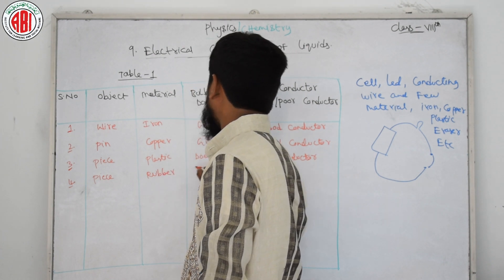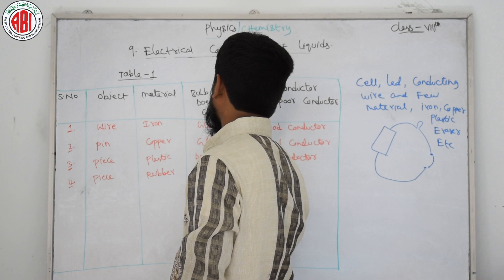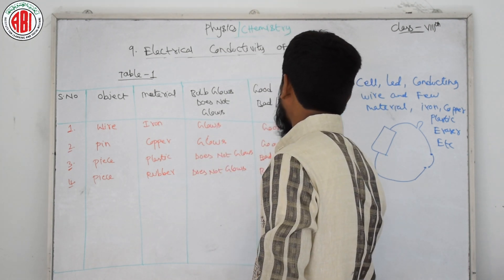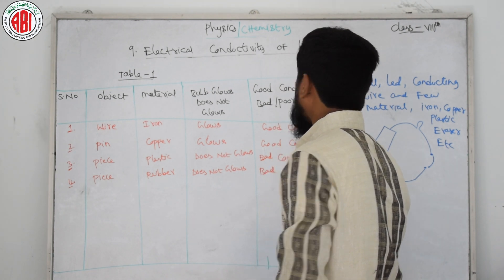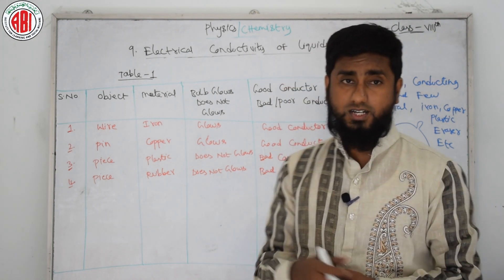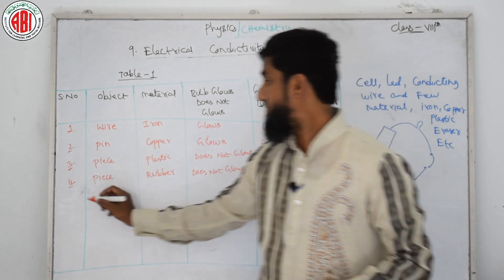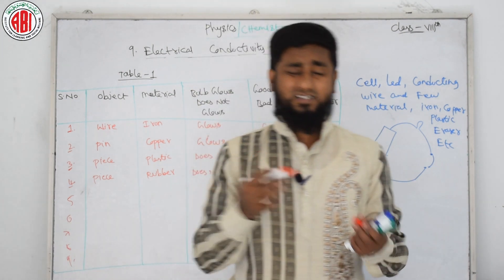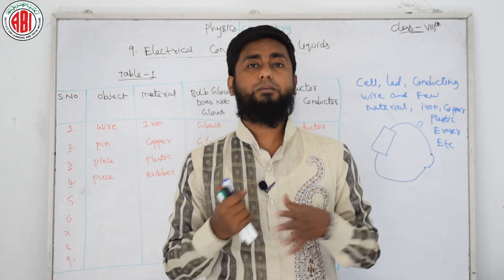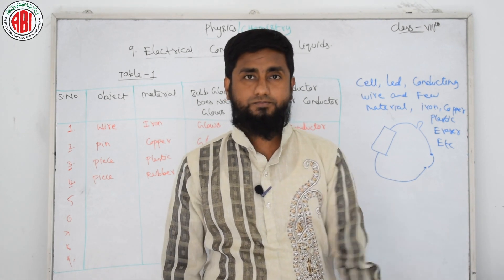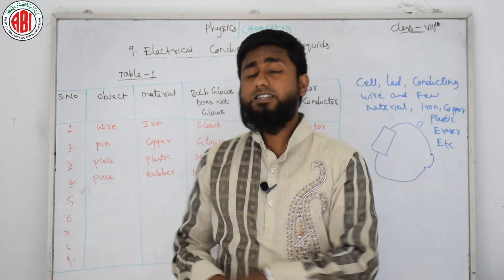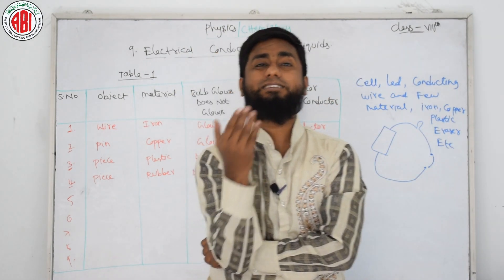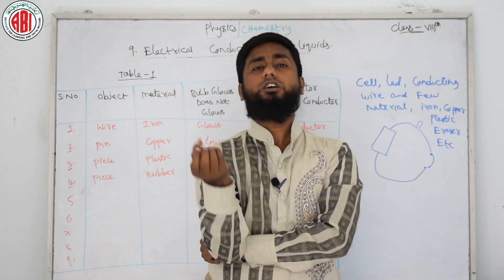For rubber and eraser, the bulb does not glow. So rubber and eraser are bad conductors. Conclusion of Activity 1: from this activity we have found that some materials allow electricity to pass through them, while some materials do not allow electricity to pass through them.